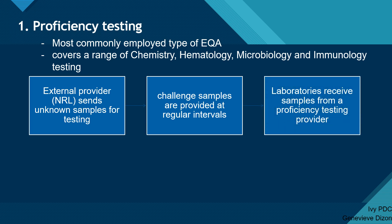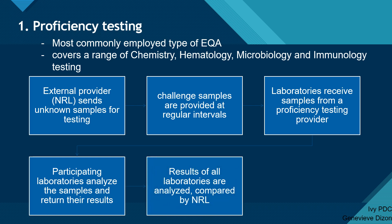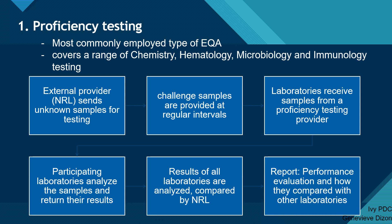Laboratories receive the samples from the proficiency testing provider and analyze them. After analyzing, the results are sent back to the NRL, which checks if the submitted results are correct and compares them across the different laboratories. After analysis and comparison, a report is given back to the participating laboratory with the performance evaluation and how they compared with other laboratories.